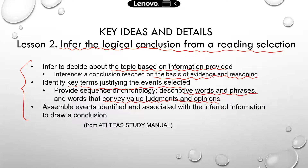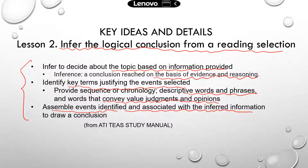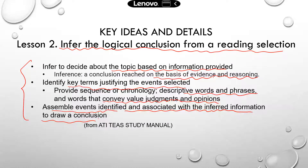The ability to identify those key terms and make inferences is also important for this lesson. Last, you need to be able to assemble events identified and associated with inferred information to draw a conclusion — based on all the evidence provided and your own reasoning — about what the reading selection is about or what the author's opinion is on certain events.